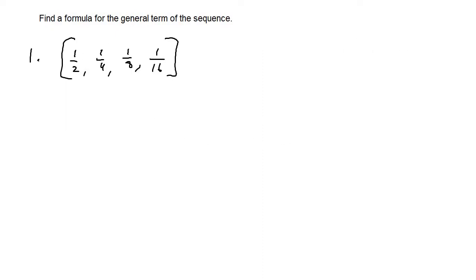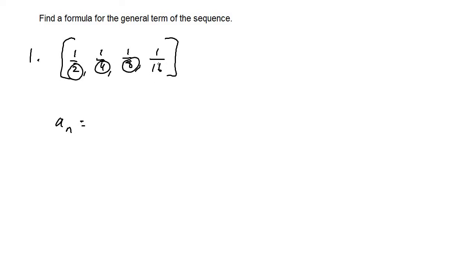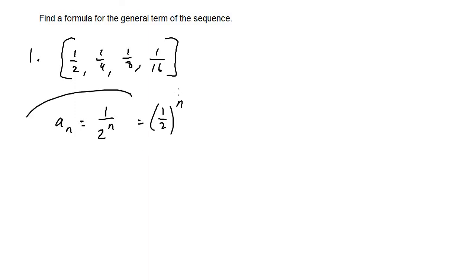For the next set of problems we have to find a formula for the general term of the sequence — essentially working backwards from a list of terms. For the first sequence, the pattern in 2, 4, 8, 16 is powers of 2: two to the first, two squared, two cubed, two to the fourth. So the general term is 1 over 2^n, or equivalently (1/2)^n — both are acceptable answers.